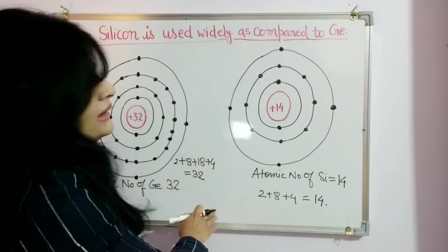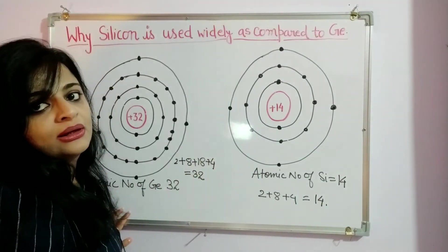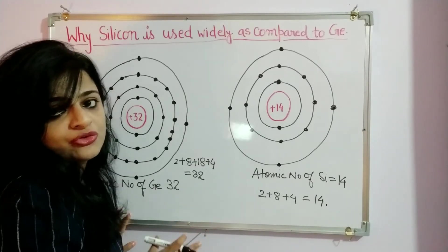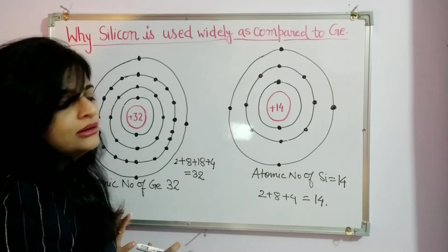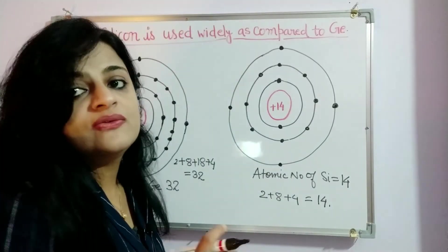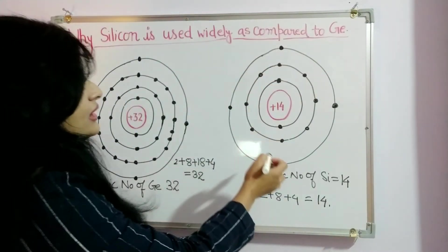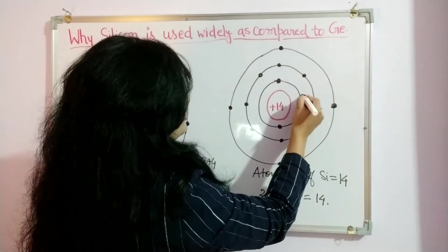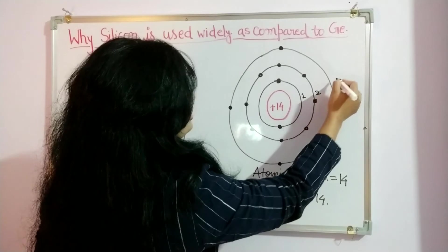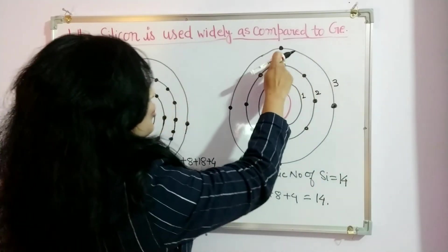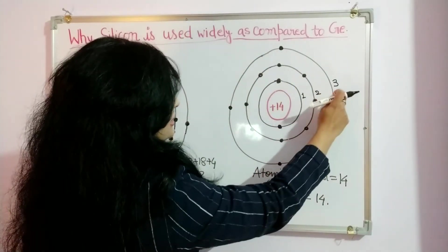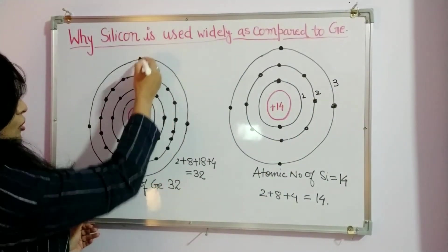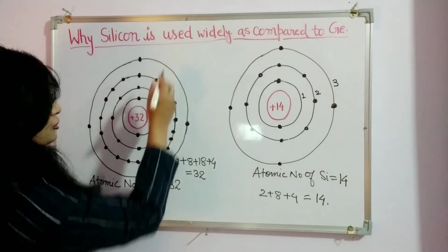Now let's come to the topic. Why is silicon better than germanium for the manufacturing process of devices? As you can see, the valence electrons in silicon are at the third shell: first shell, second shell, and third shell.